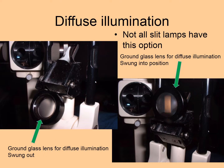The first method that can be used on the slit lamp is diffuse illumination. Not all slit lamps have this option automatically enabled. In order to effect diffuse illumination there must be a ground glass, which is normally swung out of the way. To achieve diffuse illumination this ground glass lens must be swung into position in front of the slit lamp beam so as to diffuse it.